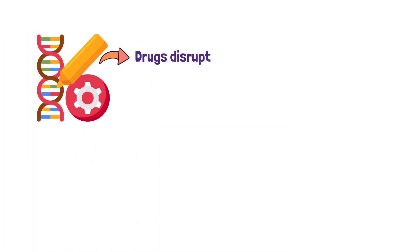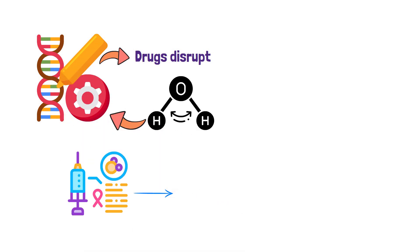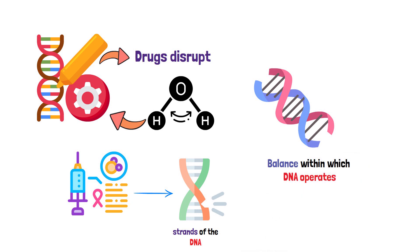The stability and functionality of DNA hinge on this structure. For instance, if a drug were to disrupt the hydrogen bonds in DNA, as might be explored in cancer treatments, it would break apart the two strands of the DNA molecule, affecting its normal function. This highlights the delicate balance within which DNA operates.